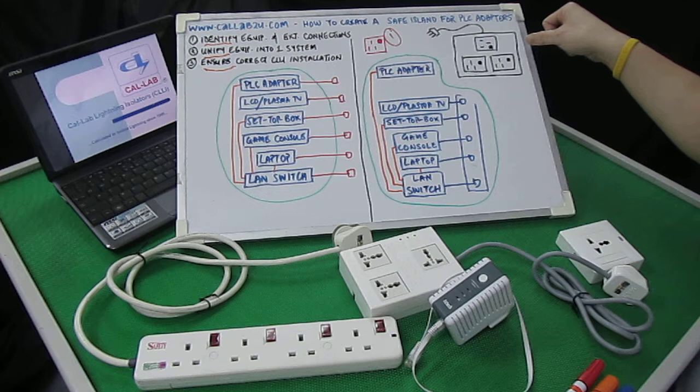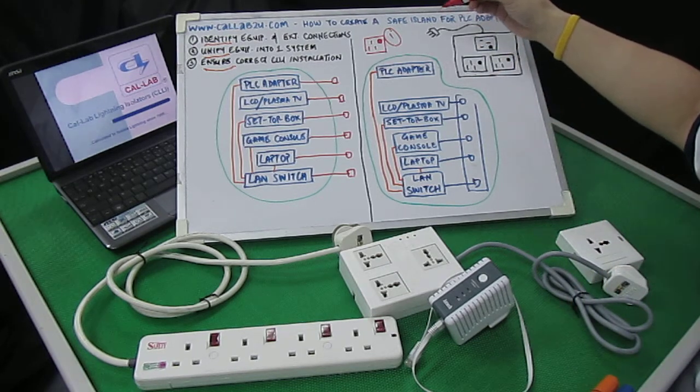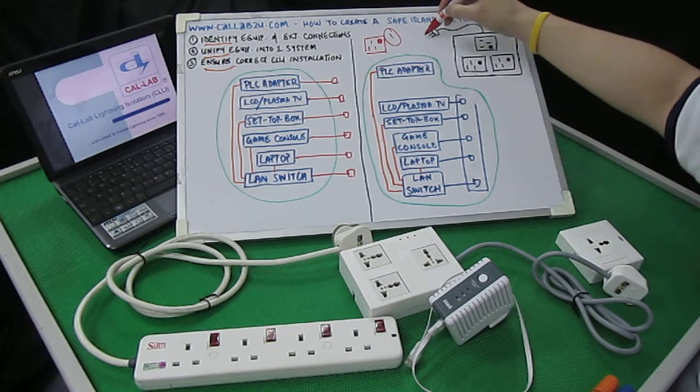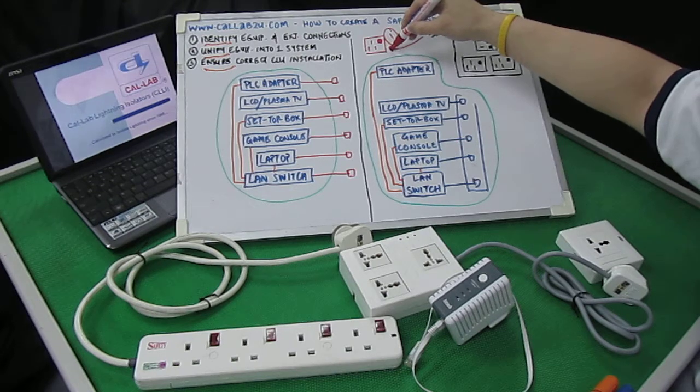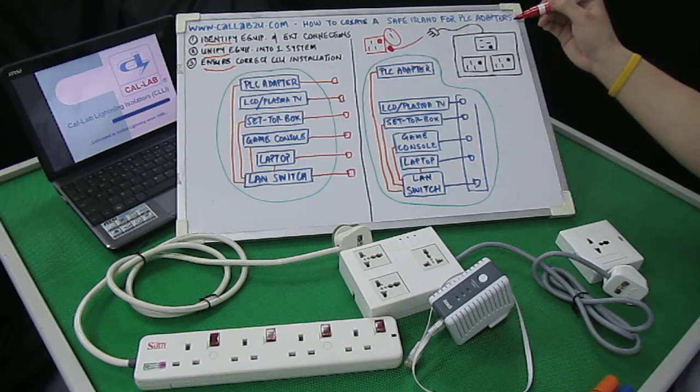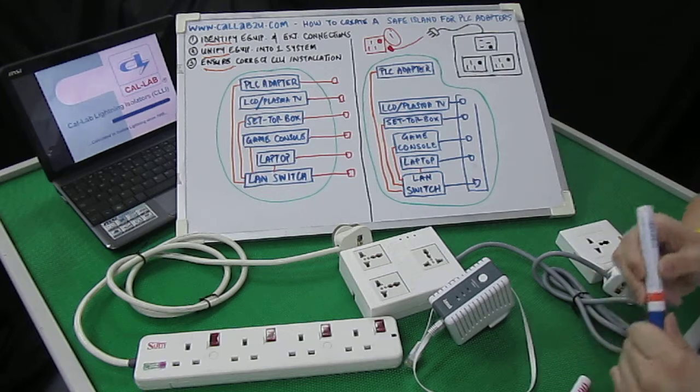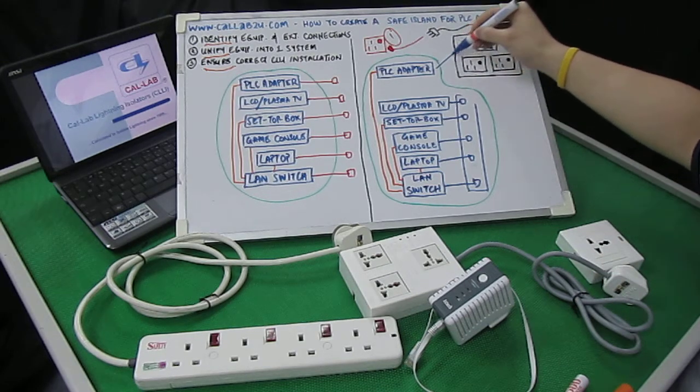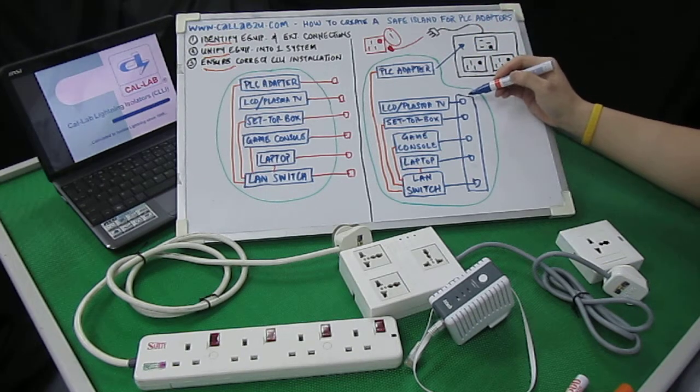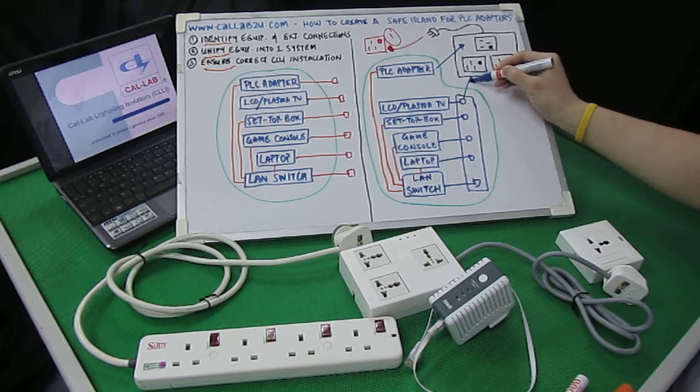The first installation that has to be done is that the 3-pin plug of the Shure Streamer has to be plugged directly to a wall outlet. That is the most important step. And then in this particular lightning isolator model or the Shure Streamer, the PLC adapter has to be plugged into the uppermost socket.